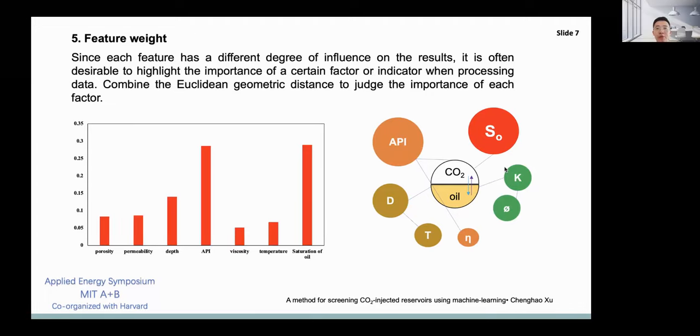Due to the different requirements for the miscibility degree of carbon dioxide crude oil system, it is often hoped to highlight the importance of a certain factor or indicator when processing data, or to rank the importance of each indicator or feature. If only weighting is carried out according to the basic rules and subjective factors, it will still cause the problem of the subjectivity of the data set. So other methods are used to judge the importance of the features to weight the data. Here, the Relief method is used to process the features, and the importance of different features is obtained. The results are shown in the figure below.